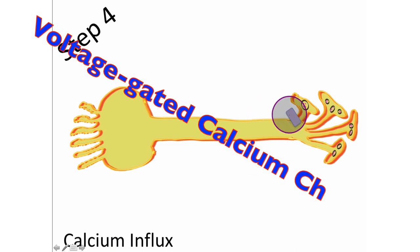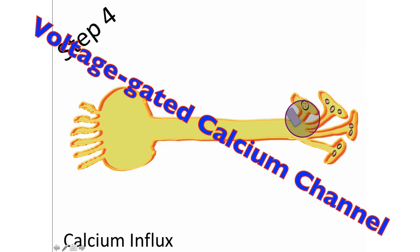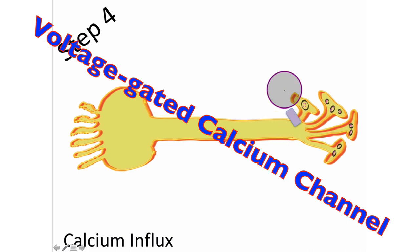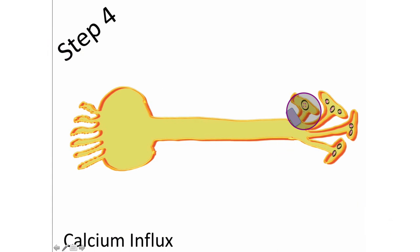This is a protein channel, specifically a voltage-gated calcium channel. For calcium to move into this neuron, the gate must be open. Because it is a voltage-sensitive protein, it opens when there is a change in voltage — a depolarization event. So calcium influx through this voltage-gated channel is going to induce exocytosis of the neurotransmitters into the synaptic cleft.